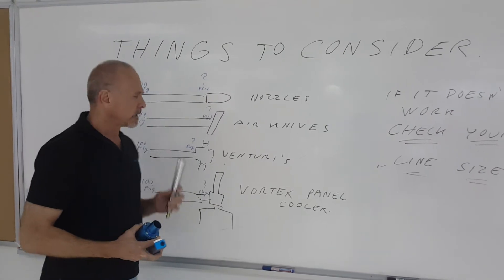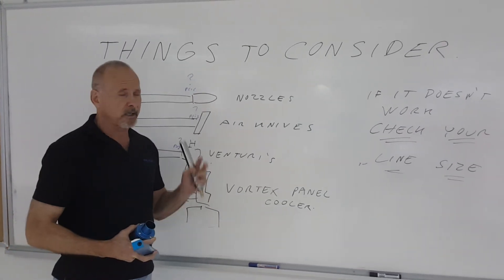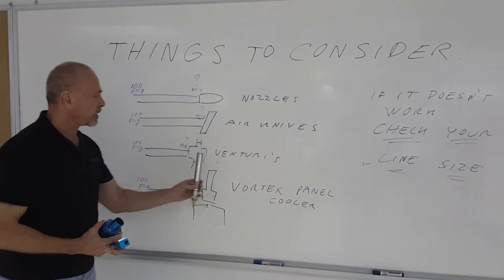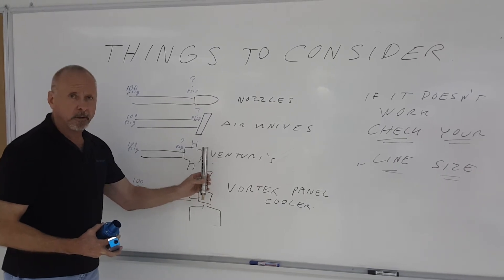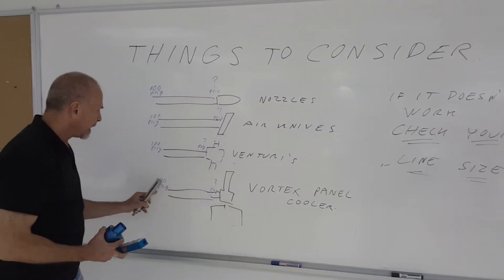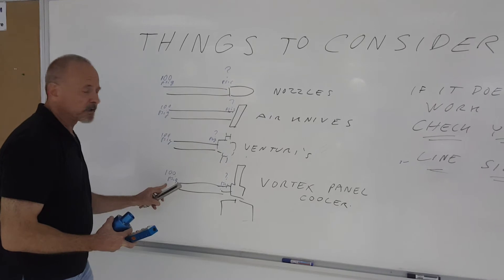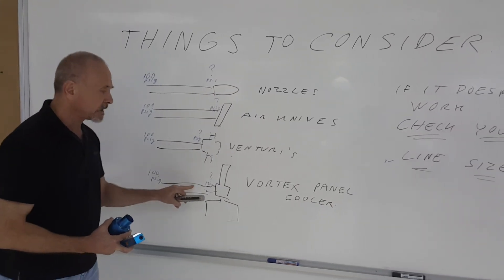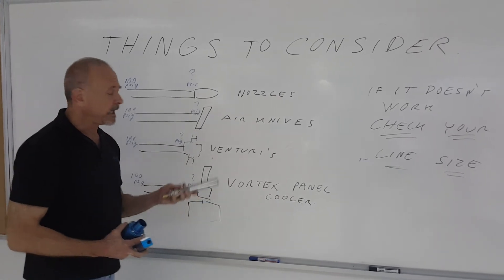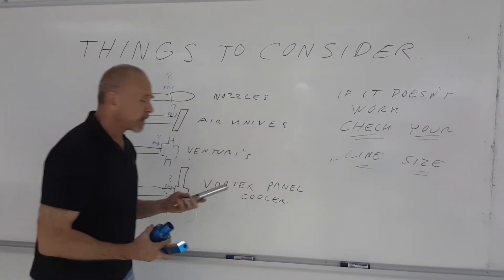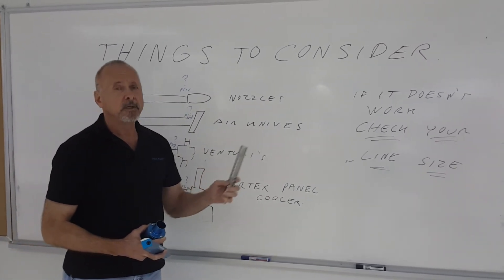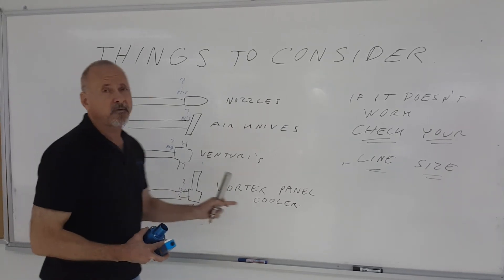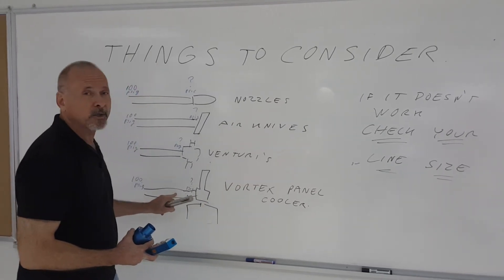And finally, people don't even notice most of the time unless there is a problem in cooling - it's not cooling enough - is the supply line to a vortex panel cooler. Again, upstream it could be 100 pounds per square inch, but depending on the size of the cooler, you better watch the size of your supply line. I have seen eight millimeter supply lines trying to supply 40 CFM to a cooler that's maybe 10 feet long. It's not going to work - you're going to have a tremendous pressure loss.